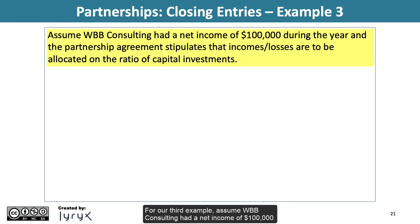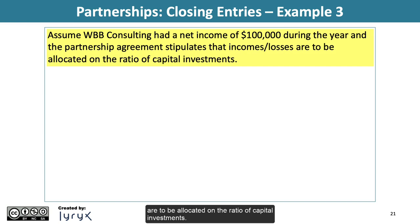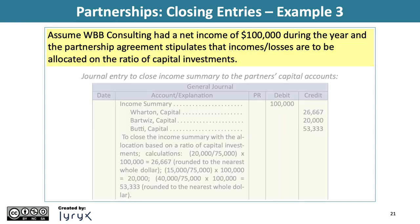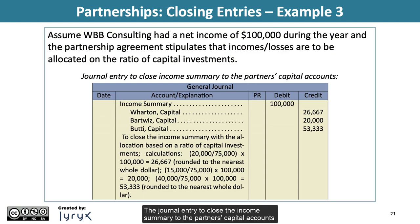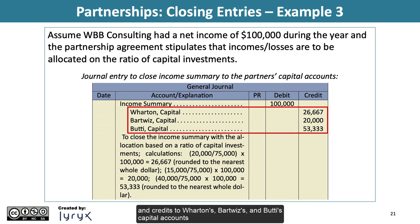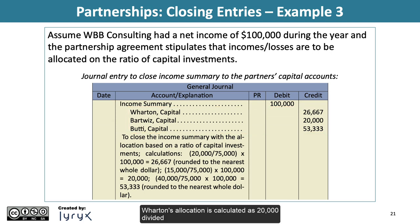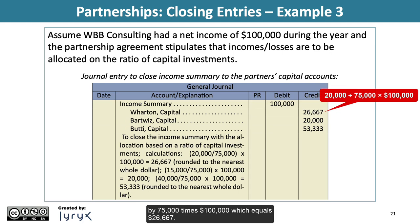For Example 3, assume WBB Consulting had a net income of $100,000 during the year and the partnership agreement stipulates that incomes and losses are to be allocated on the ratio of capital investments. The journal entry would include a debit to income summary for $100,000 and credits to Wharton's, Bartwiz's, and Beauty's capital accounts for $26,667, $20,000, and $53,333, respectively. Wharton's allocation is calculated as $20,000 divided by $75,000 times $100,000, which equals $26,667.